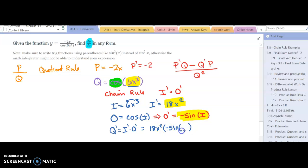And my I was 6x cubed. I need to remember to plug that back in. So now as I do my quotient rule, this is what I'm going to use for Q prime: the 18x squared times negative sine of 6x cubed.